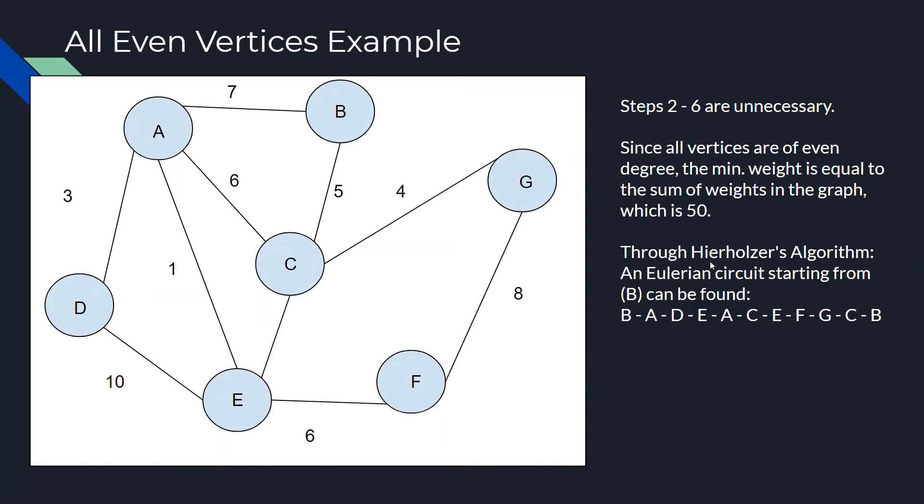And through Hierholzer's algorithm, an Eulerian circuit starting from B can be found as such. Start from B, go to A, then to D, then E, back to A, go to C, E, F, G, C, B. And, of course, in Hierholzer's algorithm, you can make smaller Eulerian circuits and run through the algorithm that way, but just for brevity's sake, this is just a complete Eulerian circuit.